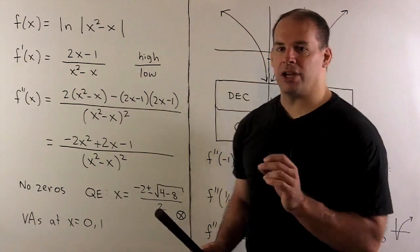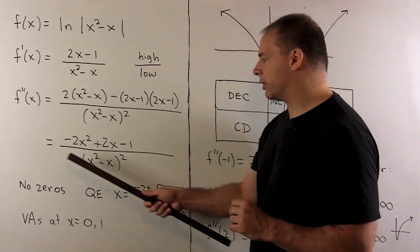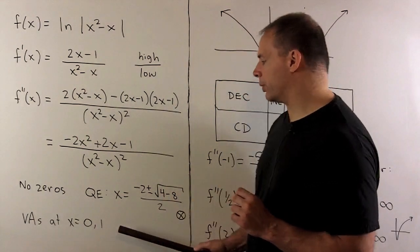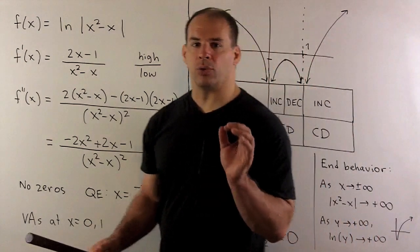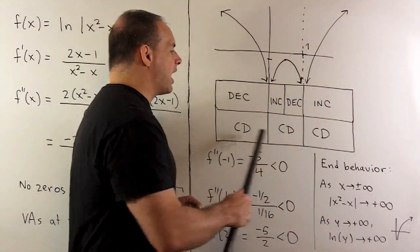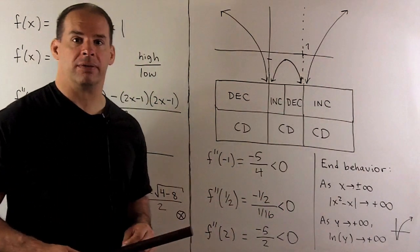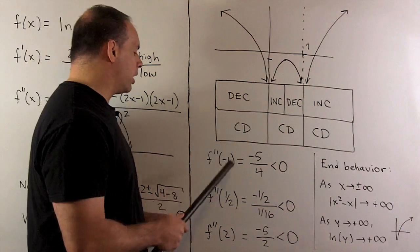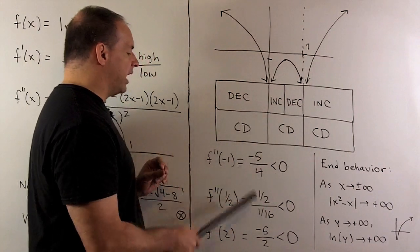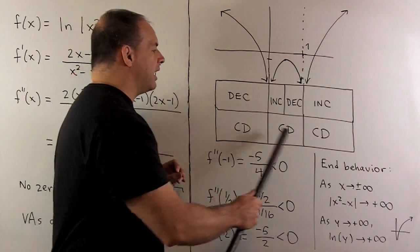Since the numerator quadratic has no zeros, the only places where concavity can change are where the denominator equals 0 — exactly at our vertical asymptotes. We split the real line along those asymptotes, then check the second derivative at x = -1, 1/2, and 2. In each case the second derivative is negative, so the function is concave down everywhere on its domain.